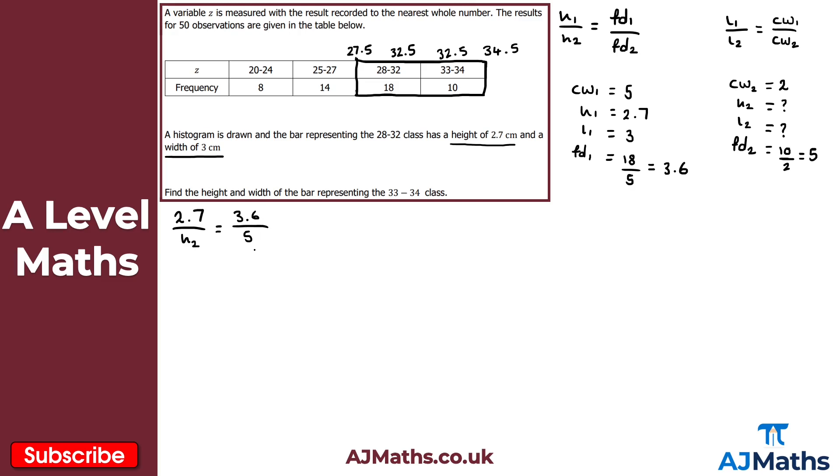3.6 divided by 5, that's 0.72. And if I then times through by H2, what I get then is 0.72H2 is equal to 2.7. And then divide both sides by 0.72 here. So therefore, H2 is equal to 2.7 divided by 0.72. What that gives us then here, if you do this correctly on your calculator, is 3.75 centimeters there.